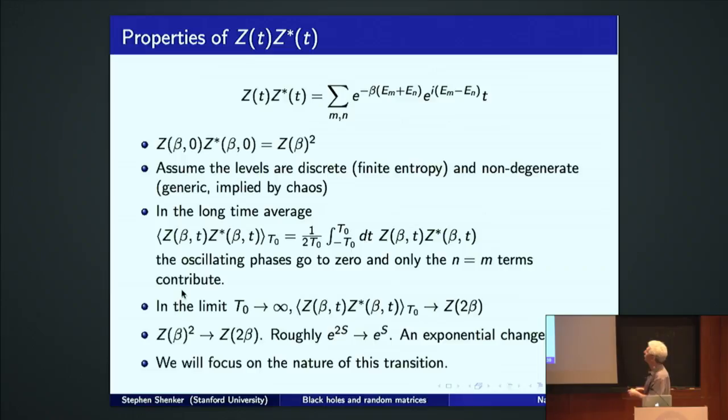Well, what are the properties of this zz star quantity? There it is again. Well, at time zero, it's clearly just the partition function squared. If we assume the levels are discrete, we're in finite entropy, and non-degenerate, as we're going to expect from chaos,